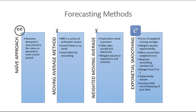Exponential smoothing involves a formula: the forecast for today equals the forecast for the previous period, plus a smoothing constant (alpha, ranging between 0 and 1), multiplied by the actual demand from the previous period minus the previous forecast. The smoothing constant will be given to you. We'll apply all these methods in exercises.